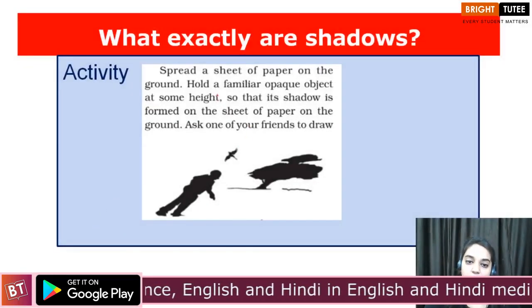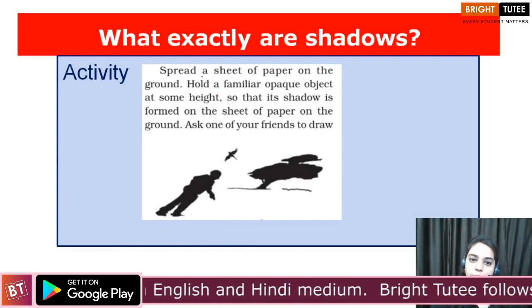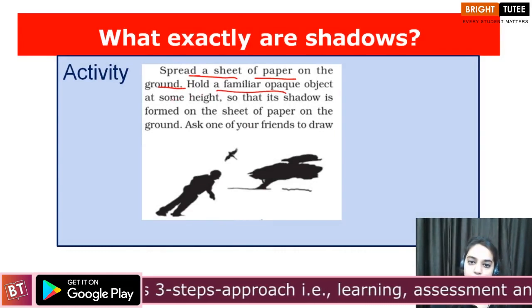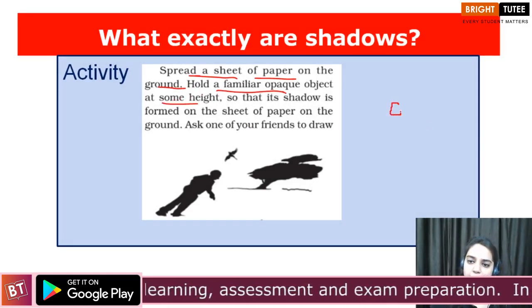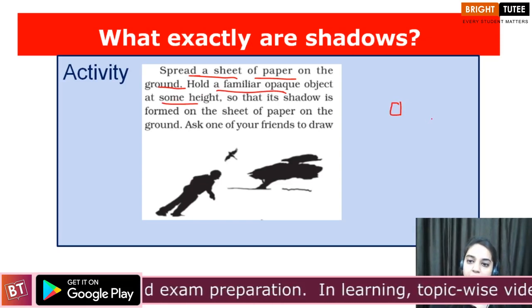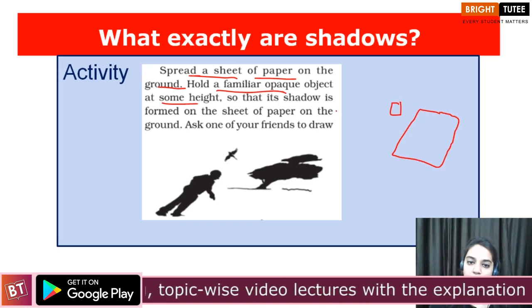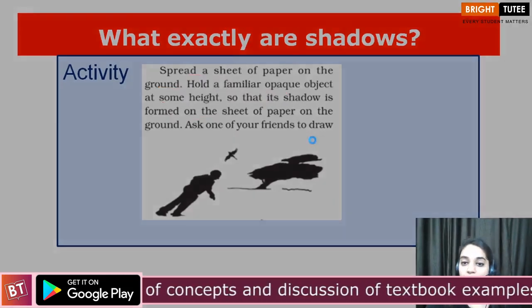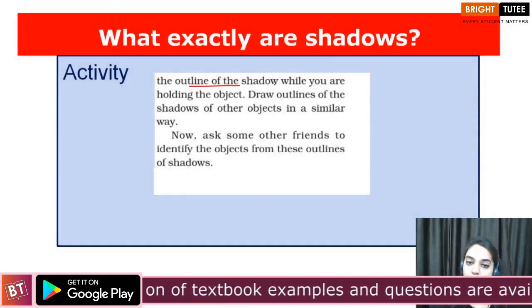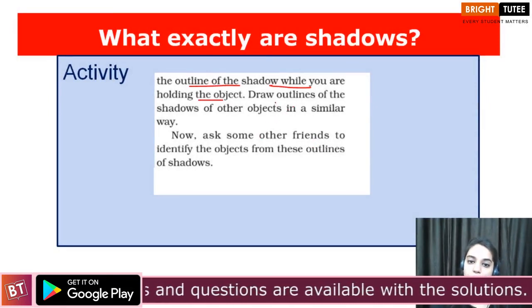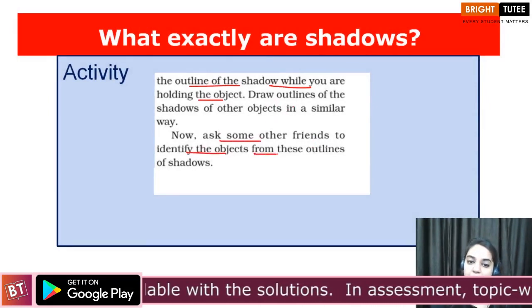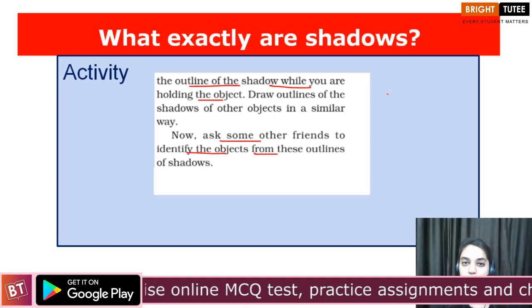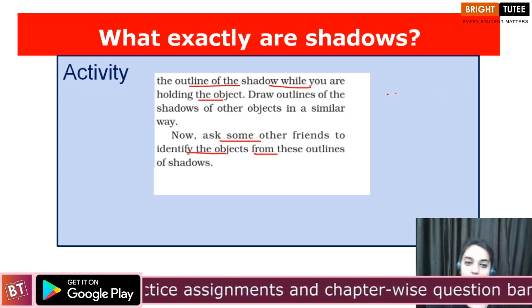Next, what you are going to do is spread a sheet of paper on the ground and hold a familiar object at some height, so that its shadow is formed on the sheet. Now ask your friends to draw the outline of the object. You will ask some friends to identify the object, and you will find that most of the objects you will be able to identify through their shadow, as we have discussed.